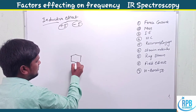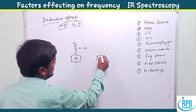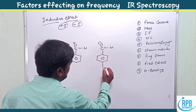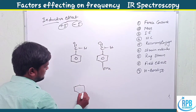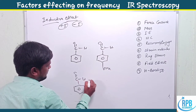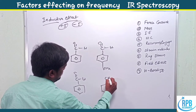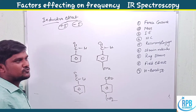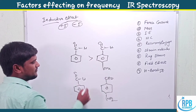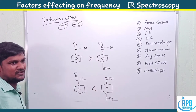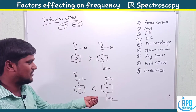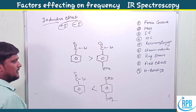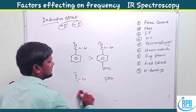For example, taking benzaldehyde with a para-methoxy group (donating) versus a withdrawing group: donating groups decrease stretching frequency, withdrawing groups increase stretching frequency. So among the three variants — withdrawing group gives the higher value, normal benzaldehyde is intermediate, and donating group (methoxy) gives the lower stretching frequency.